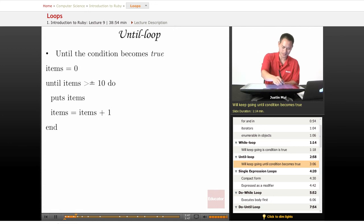Notice also our check here has changed. So this is going to print out the value zero, one, two. And once items equals 10, it's going to stop. So again, it's going to go all the way down to value nine. And it's going to have the exact same code as the while loop, but we're using the until loop for this case.